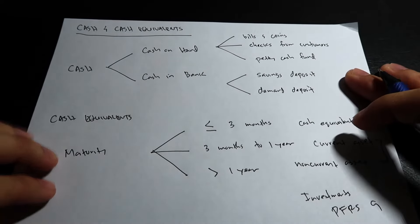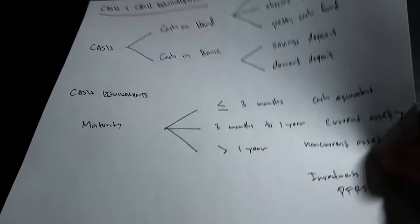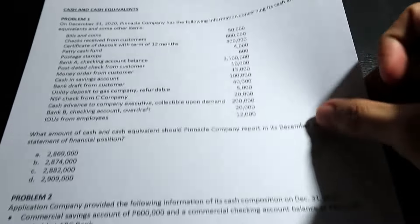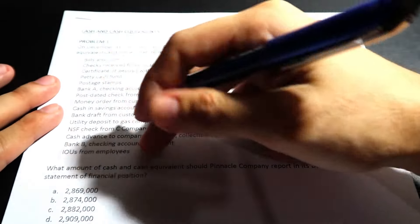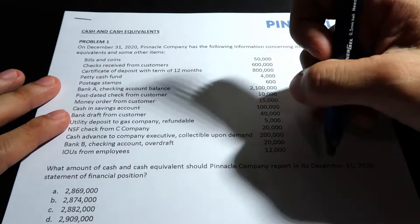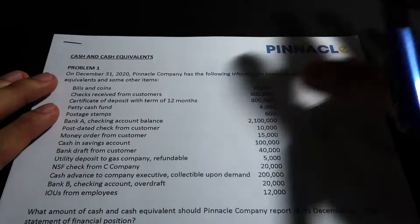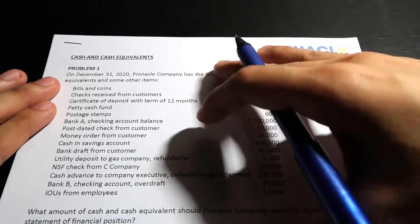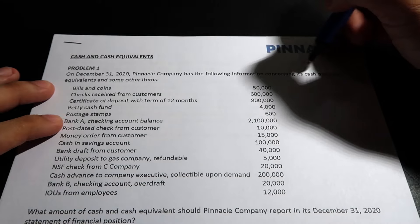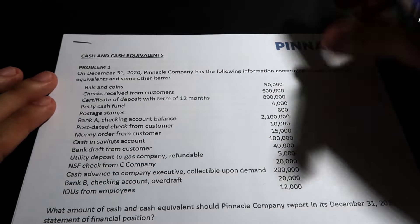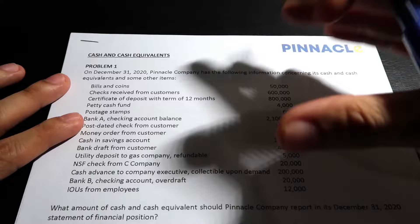Those longer-term investments are accounted for using PFRS 9, which we'll discuss in the future. So you have cash and you have cash equivalents. Let's do our exercises. Problem number one: what amount of cash and cash equivalents should Pinnacle Company report in its December 31, 2020 statement of financial position? We'll identify the classification of each item and add up those that qualify as cash and cash equivalents.